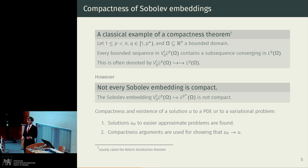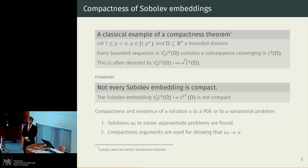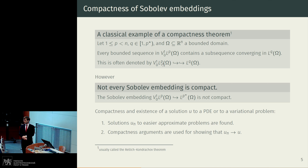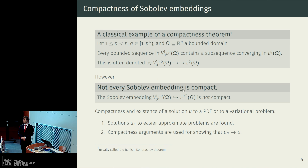An important property of Sobolev embeddings is their compactness. You have probably heard that every bounded sequence of real numbers contains a subsequence that converges to some number. These Sobolev compactness theorems are just much more involved versions of such compactness theorems. This is probably one of the most classical formulations, the so-called Rellich-Kondrachov theorem, which tells us that if we have a sequence of functions bounded in Sobolev Lp space, then we can extract a subsequence that converges in Lq space. We can take this q up to the Sobolev exponent p-star, but we have to exclude it, because the so-called optimal Sobolev embedding where q equals p-star is not compact.